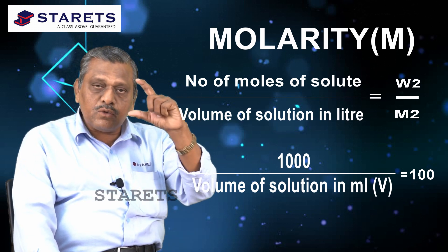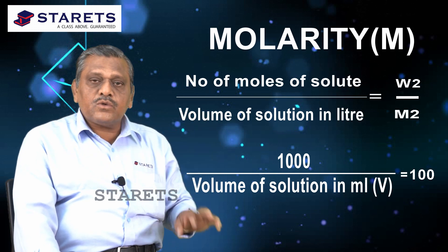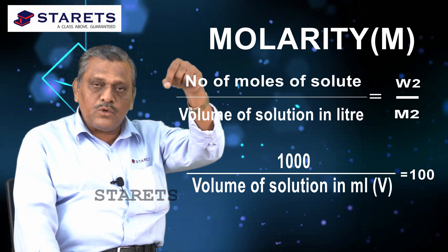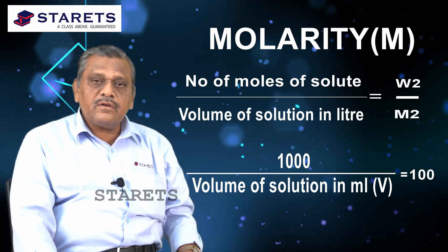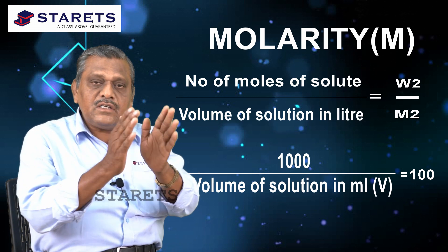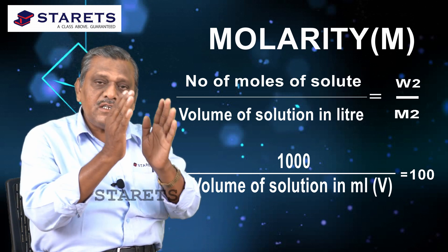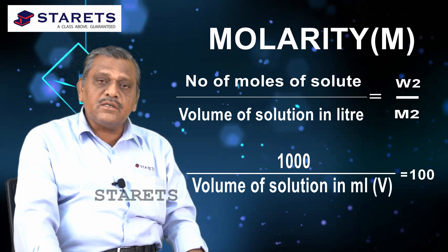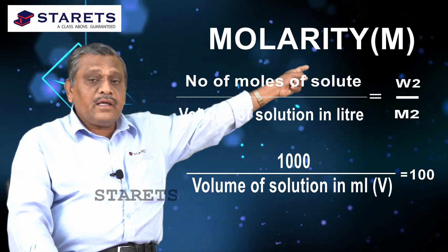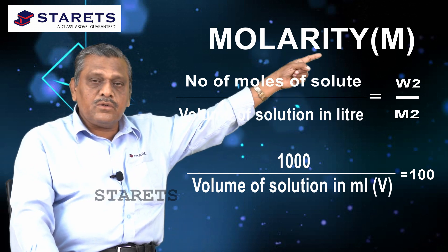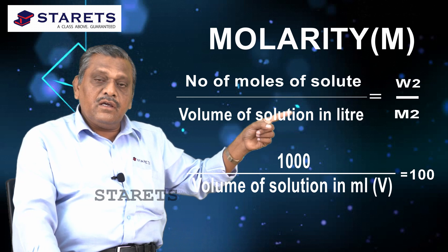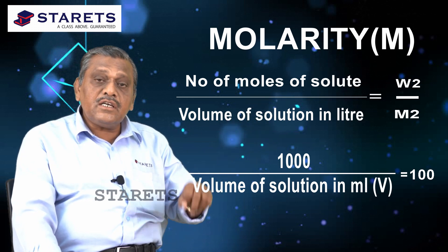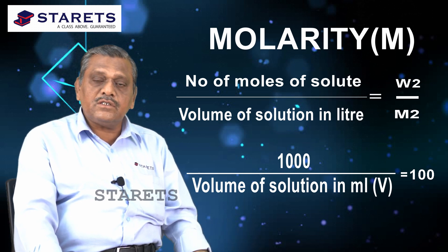For a specified volume of solution, we find how many moles of solute are present — moles per liter. If W2 grams of solute are dissolved in V cc of solution, then molarity capital M equals W2 divided by M2, multiplied by 1000, divided by V, where V is the volume of solution in cc.